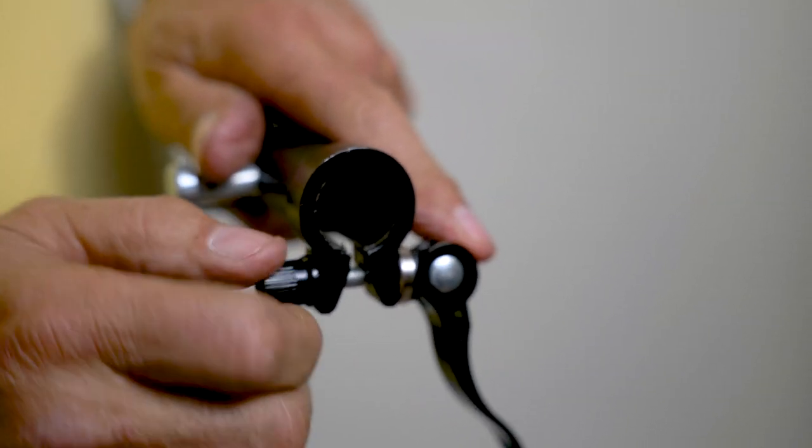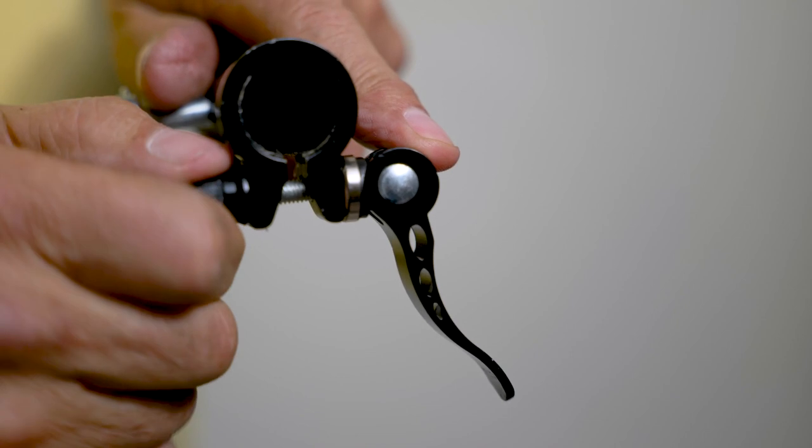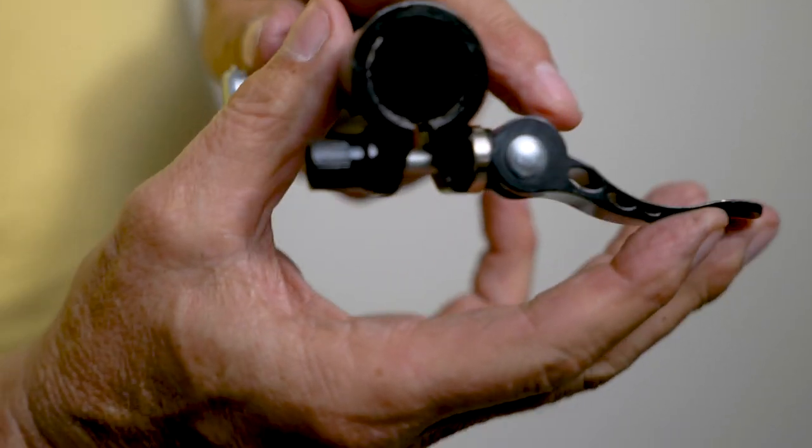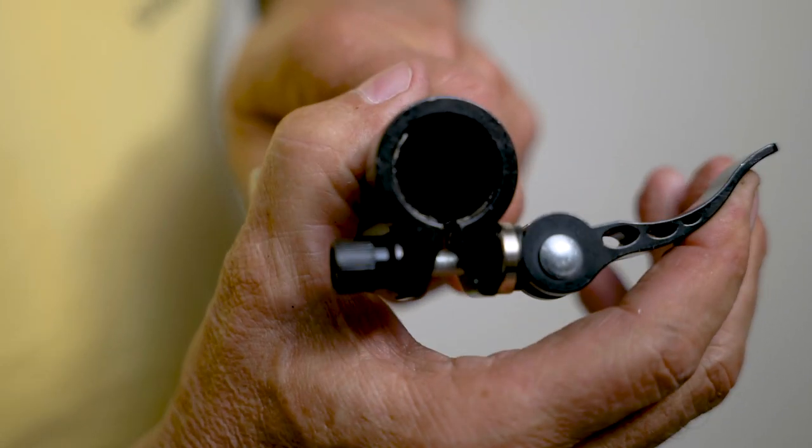You'll notice there are two collar clamps on each of the black posts. The collar openings must line up with the split in the tube. Once it's lined up you can clamp it down.